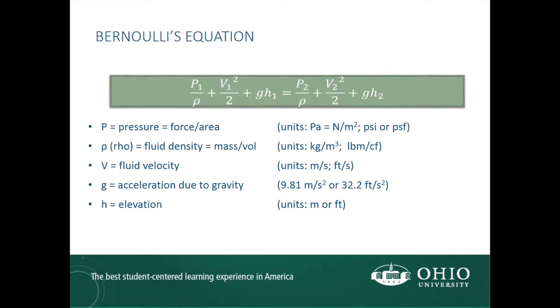P is the pressure, which is force per area and has units of pascals or psi, pounds per square inch. Rho is the fluid density, which is mass per volume and has units of kilograms per cubic meter or pounds mass per cubic foot.